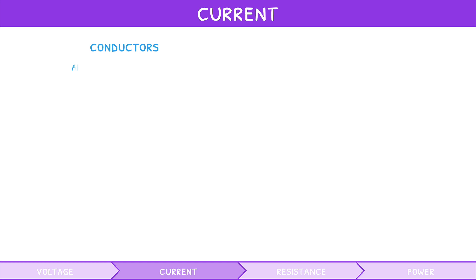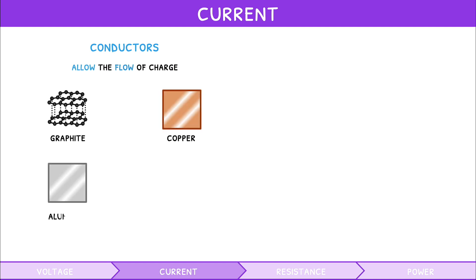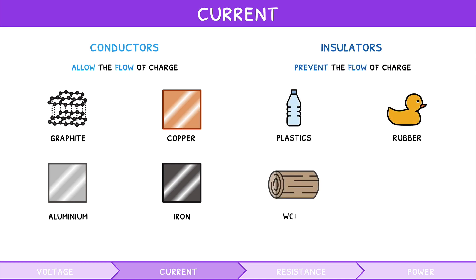Conductors are materials that allow the flow of charge, and are typically graphite and metals such as copper, aluminium and iron. However, current does not flow across all materials. Insulators are such materials that prevent the flow of charge, typically plastics, rubber, wood and glass.